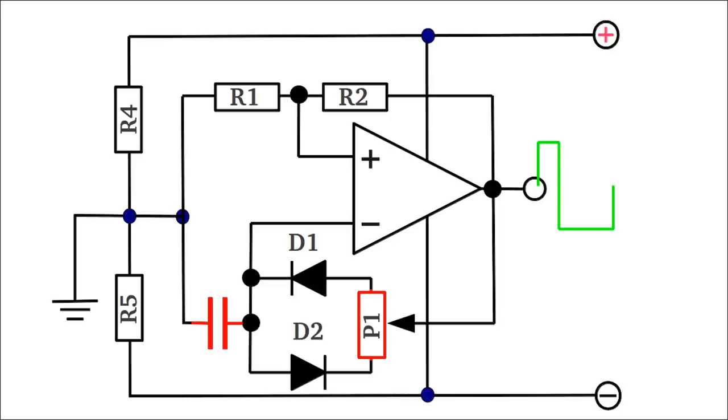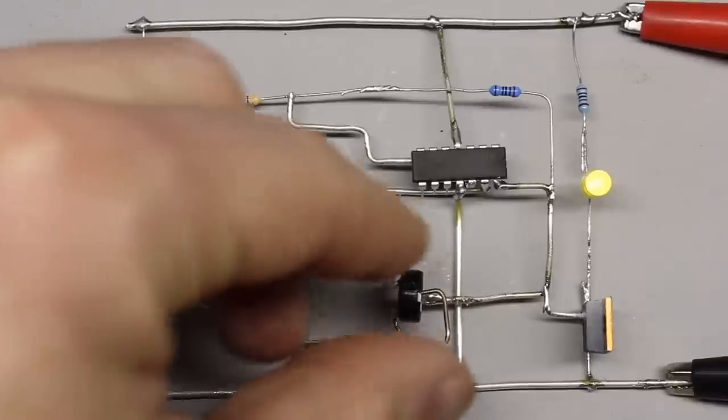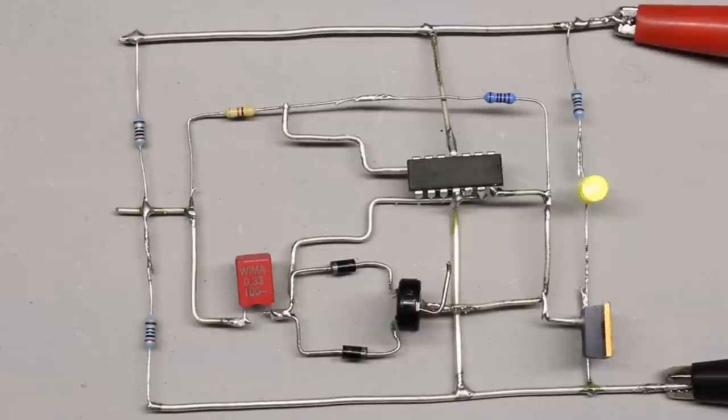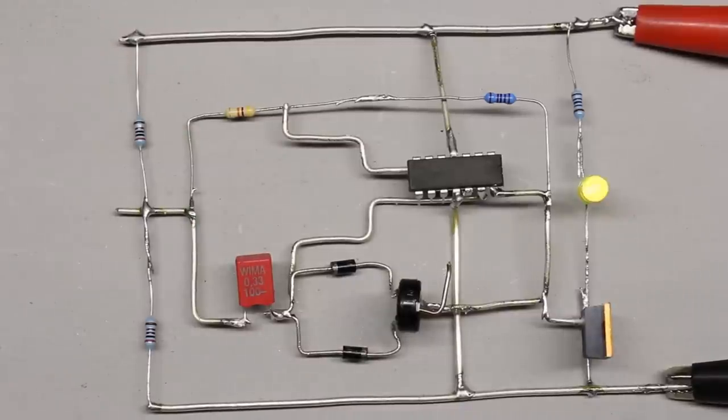Like explained in the video about multivibrators, the switching frequency is affected by the resistance and the capacitance of the coupling RC network. While using a 1 megaohm potentiometer and a capacitance of 0.33µF, the resulting frequency of approximately 1Hz is visible.